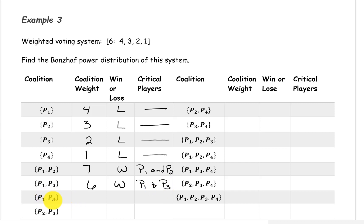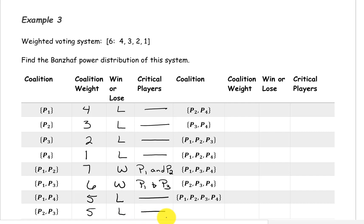The coalition with players 1 and 4 has a weight of 5 — a losing coalition, no critical players. The coalition with players 2 and 3 has a weight of 3 plus 2, which is 5 — also losing. Players 2 and 4 give a weight of 4 — losing. Players 3 and 4 give a weight of 3 — also losing. None of these two-player coalitions require critical player analysis.